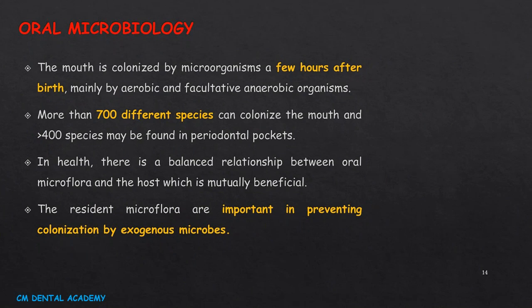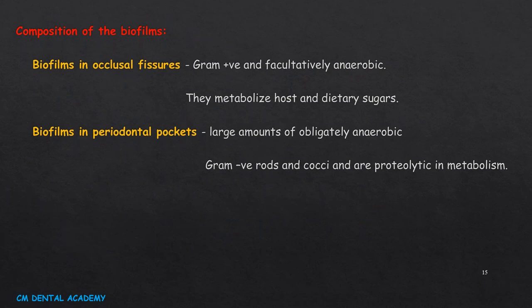Oral microbiology — which microorganisms contribute to gingivitis and periodontitis. The mouth is colonized by many organisms; within a few hours of birth around 700 different species can colonize, and more than 400 species may be found in periodontal pockets. In health, there is a balanced relationship between oral flora and host defense. Resident microflora are important in preventing colonization by exogenous microbes. When biofilm forms on teeth, it is mainly gram-positive and facultative anaerobes that metabolize host and dietary sugars.